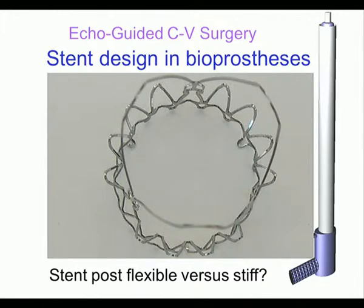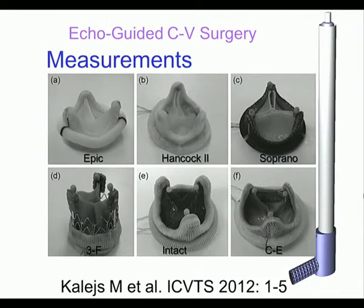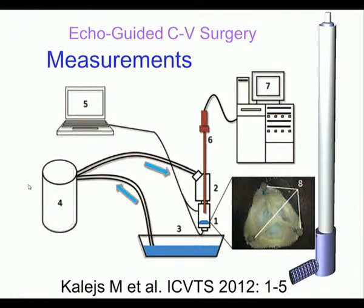Stent design in bioprosthesis is one application I believe is of interest. One question here is, if you design a new stent for a catheter valve, how flexible should the stent posts be? Should they be flexible or stiff and how does nature look like? There was an interesting study made by one of our collaborators putting ultrasonic crystals on the stent posts and pressurizing these valves in a mock loop to measure what the stent posts do when the valve is under pressure. Dr. Kalais did this work and found some interesting findings.